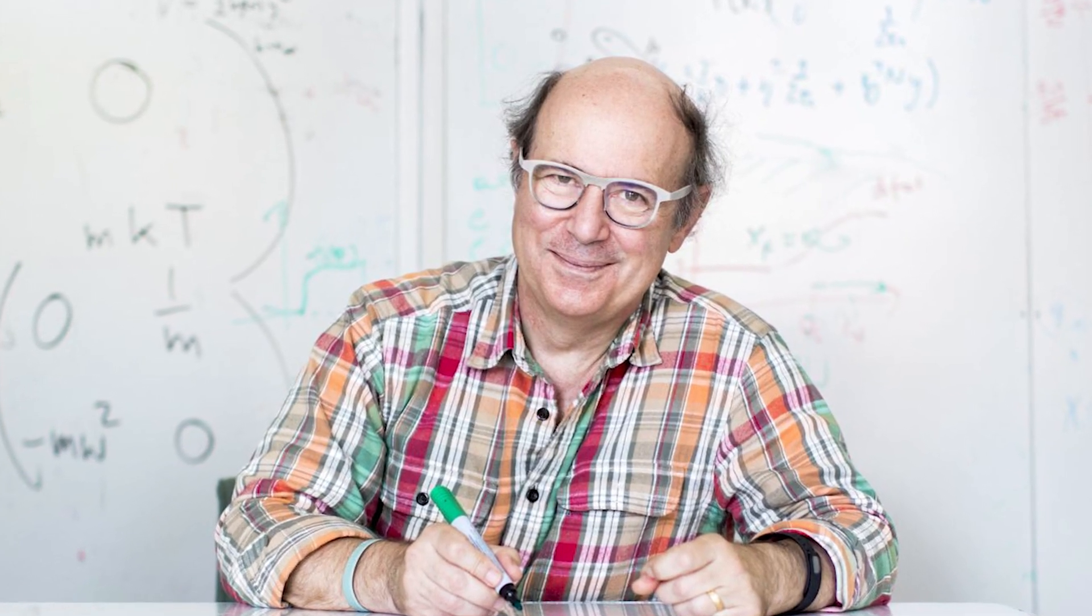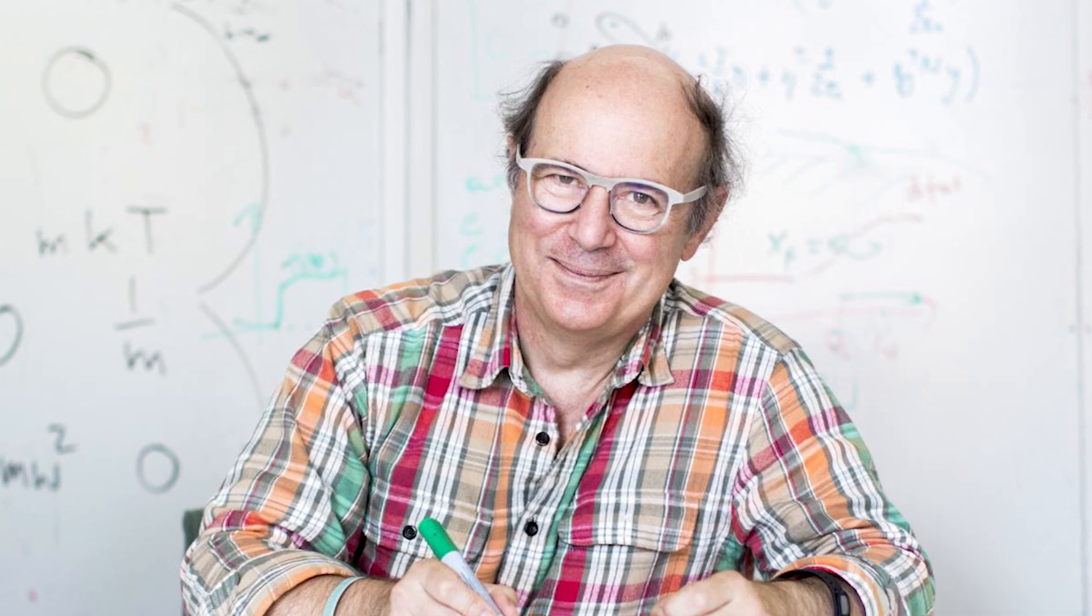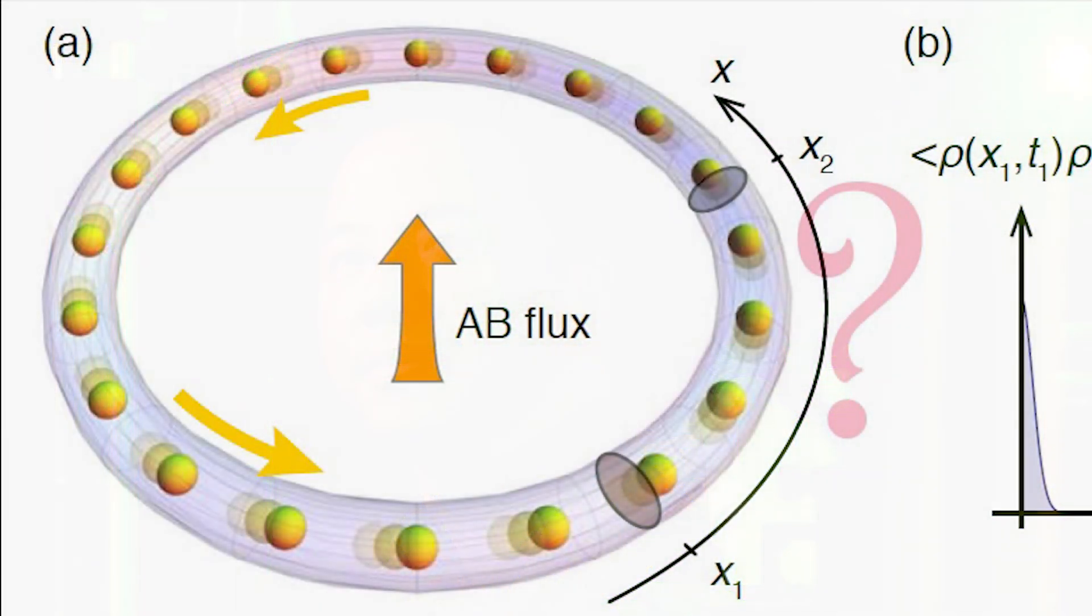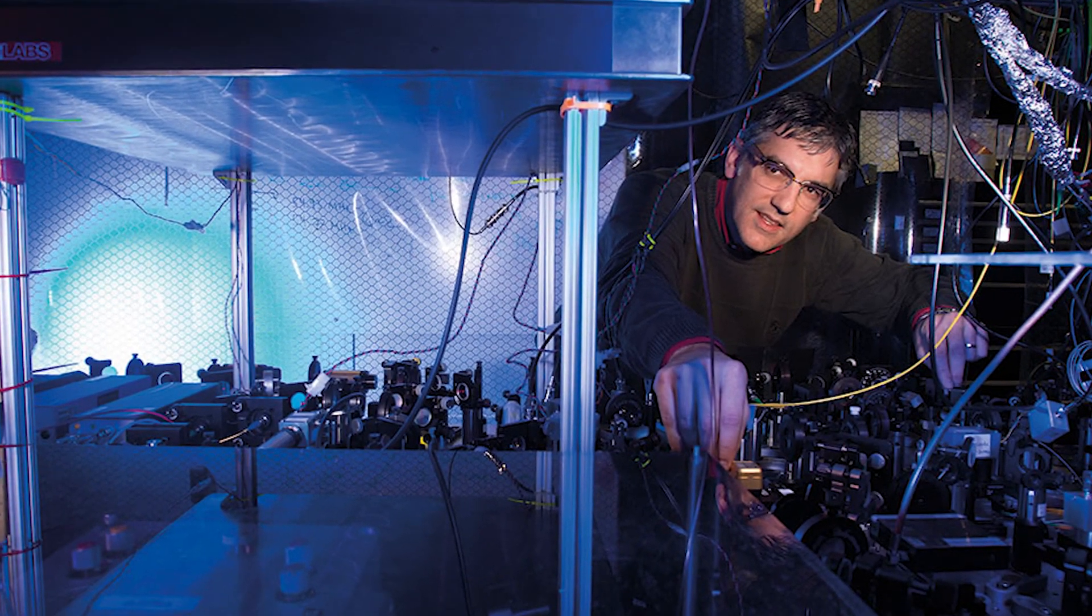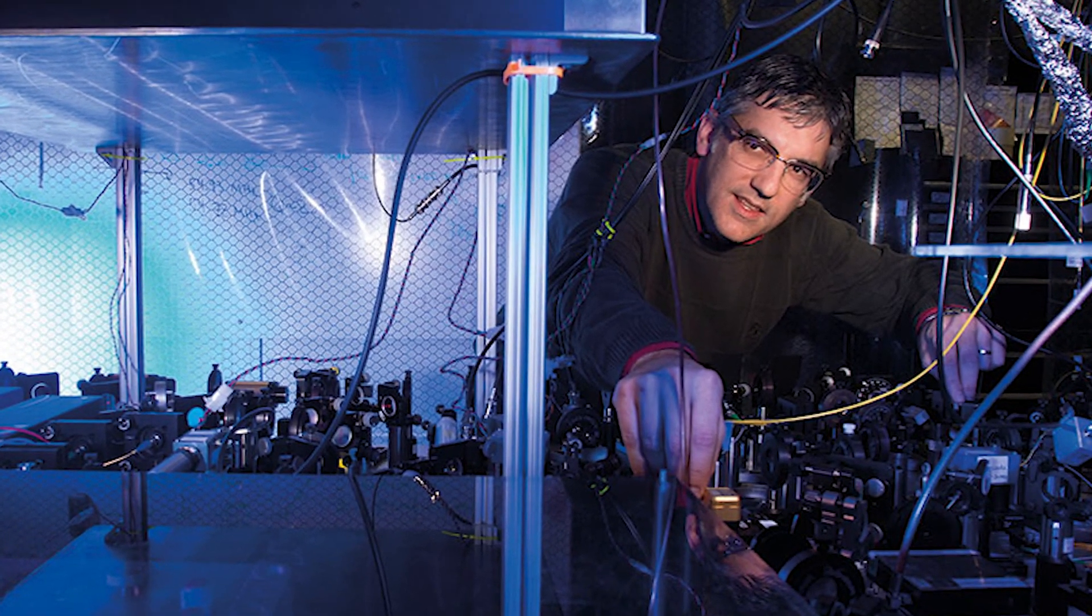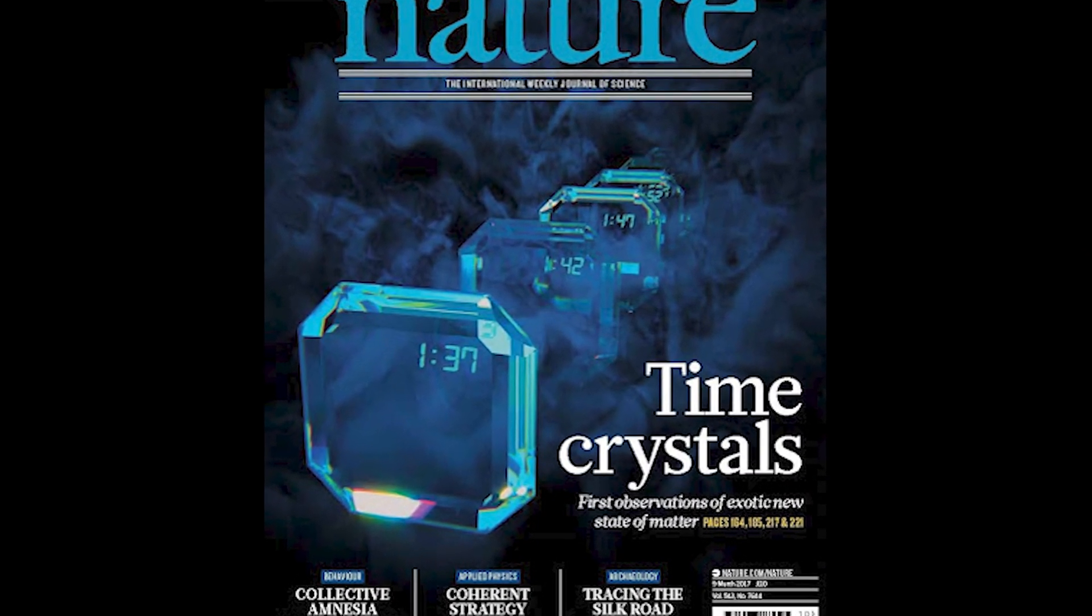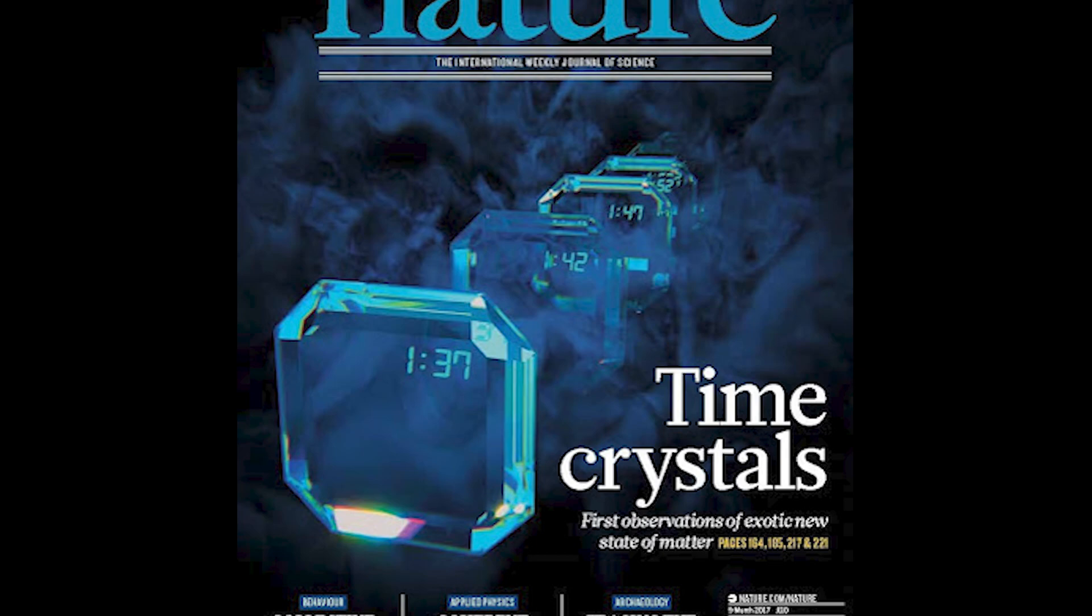Frank Wilczek first brought up time crystals in 2012. In 2013, Xiang Zhang, an engineer at the University of California, Berkeley, and his team proposed creating a time crystal in the form of a constantly rotating ring of charged ions. Later, in October 2016, Christopher Monroe at the University of Maryland claimed to have created the first discrete time crystal in the world. His team trapped a chain of ytterbium atoms in a special trap confined by electromagnetic fields.